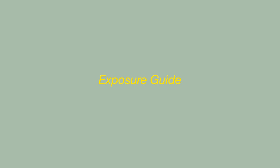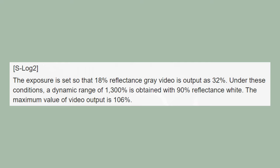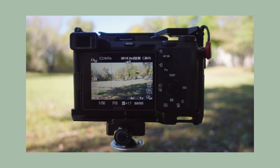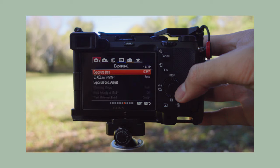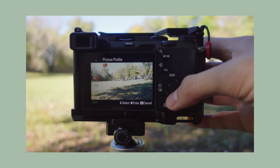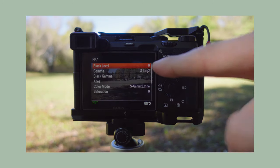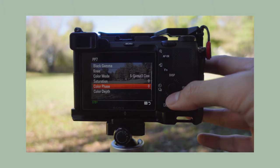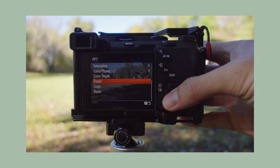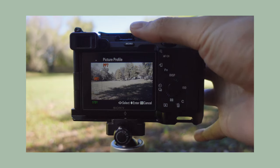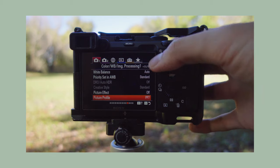How to expose with S-Log2. If you look up Sony's recommendations for exposing S-Log2, they will give you a set of parameters to follow: one is the clipping point, and the other is how many stops of overexposure are recommended. The clipping point of S-Log2 is 106. The first thing to do is navigate to your picture profile settings on page 11 of your camera settings tab. Select PP7, and make sure your gamma is set to S-Log2, your color space is set to S-Gamut 3.cine, and your detail is set to negative 7. Leave everything else as default. Note that out of the box the color space is set to S-Gamut, but as that is a wider color space, it's more difficult to color grade and introduces a green tint to your image.